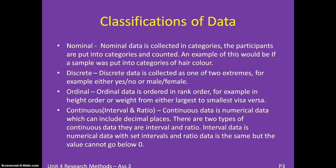Ordinal data is ordered in rank order — for example, height order, weight order, largest to smallest, or quickest to slowest sprint time, depending on what data you're collecting. And there are two types of Continuous data. Continuous data is numerical data which can include decimal places.